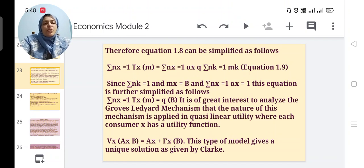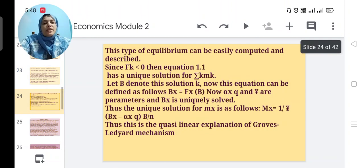The nature of this mechanism is applied in quasi-linear utility for each consumer x as a utility function: v(x)(a,b) = ax + fx(b). This type of model gives a unique solution as given by Clarke.